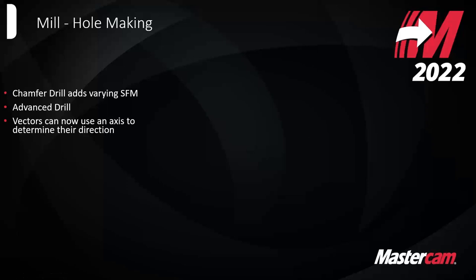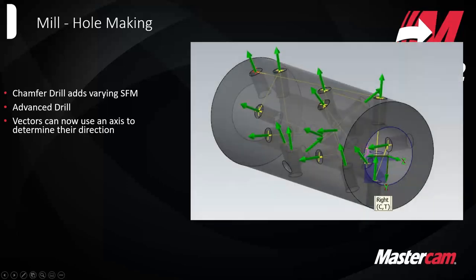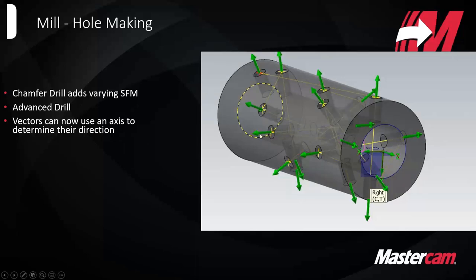Vectors can now use an axis to determine their direction on the hole selection advanced page. Say you're working on a fourth-axis part and you're trying to do a drill routine around a cylinder — before, it was difficult to set vectors for all those holes correctly, with some cycles being inversed. Now you can draw a line connecting the two ends of the cylinder and force all the vectors based off that line. If you're getting a part with a ton of drilled holes, it can quickly flip all vectors the way you want. Great improvement for fourth-axis rotary work.